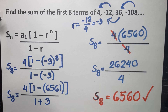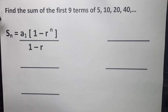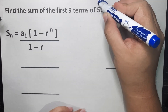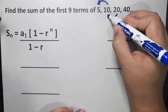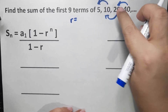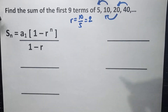Let's proceed to our last example: find the sum of the first 9 terms of 5, 10, 20, 40. First step is to find the common ratio. Current term divided by previous term: 10 divided by 5 gives us 2. So our common ratio is positive 2.